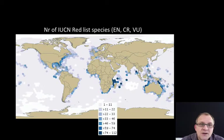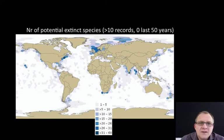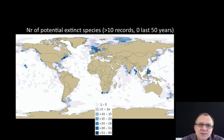Looking at the number of IUCN red-listed species — threatened species including the endangered, the critically endangered, and the vulnerable species — Southeast Asia again comes up as an area that should receive special attention. Looking at the map of potentially extinct species, those are species of which we have more than 10 records but have no longer been observed in the last 50 years. There are some spots in Southeast Asia where at least more than 30 species have not been observed in the last 50 years.